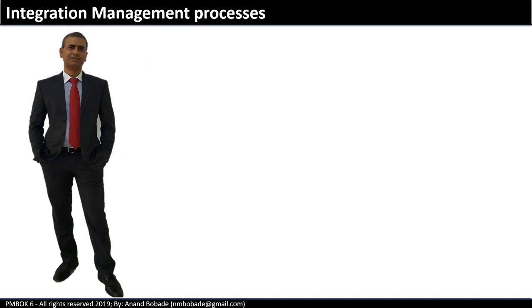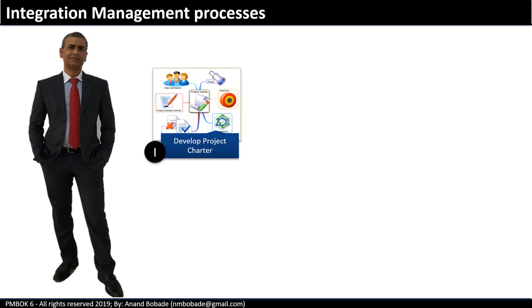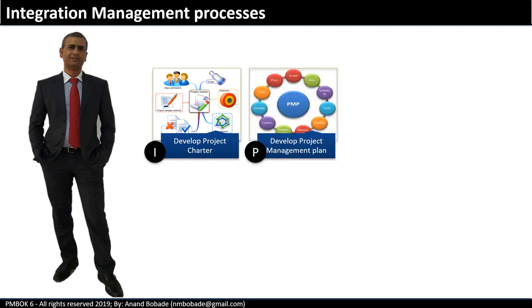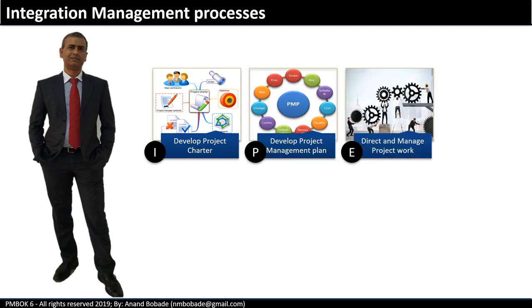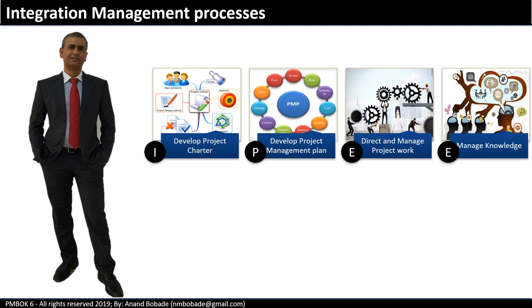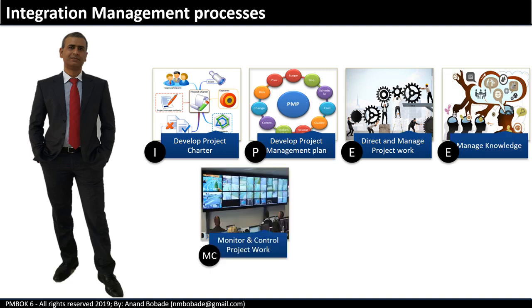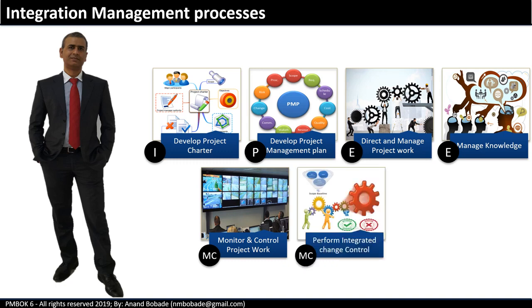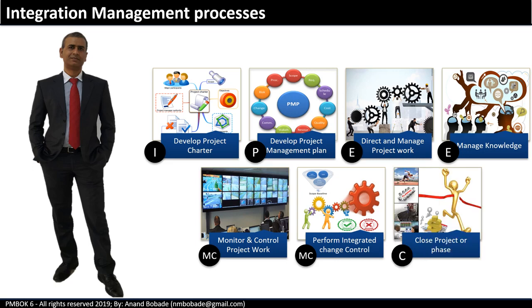Let's take a quick look at the 7 processes in the Integration Management Knowledge Area. Develop project charter is the first process in the initiation process group. Then develop project management plan, direct and manage project work, manage knowledge, monitor and control project work. We are going to learn Perform Integrated Change Control, and finally close project or phase.